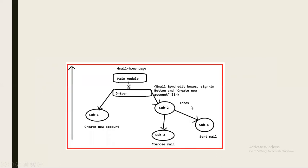For example, in a Gmail application: the main module is the home page, sub module 1 is Create New Account, sub module 2 is Inbox, sub module 3 is Compose, and sub module 4 is Sent. If the main module — the Gmail home page — is under construction but all sub modules are completed, a temporary program called a driver is used. It has components like email and password fields, a sign-in button, and a create new account link.